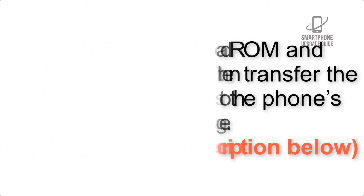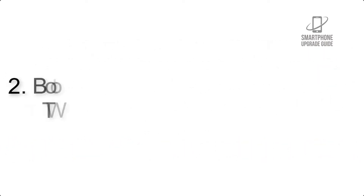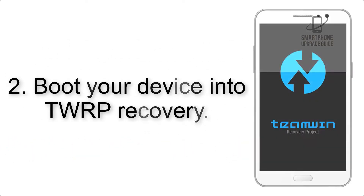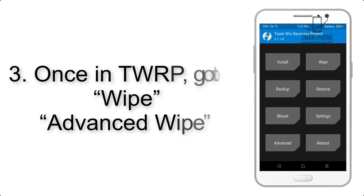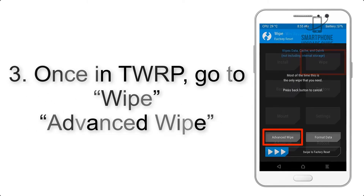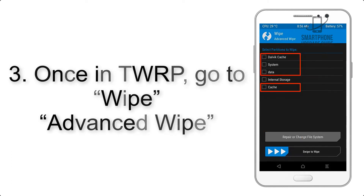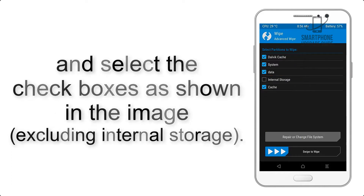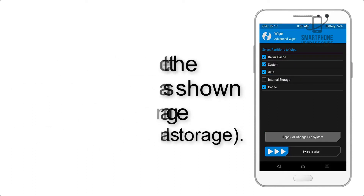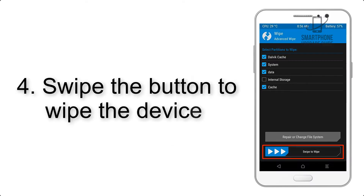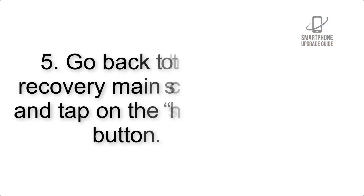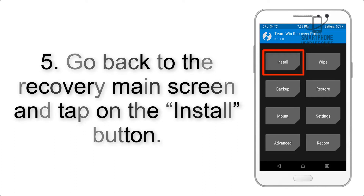Step 2: Boot your device into TWRP recovery. Once in TWRP, click on Wipe, then Advanced Wipe, and select the checkboxes as shown in the image, excluding internal storage. Step 4: Swipe the button to wipe the device.